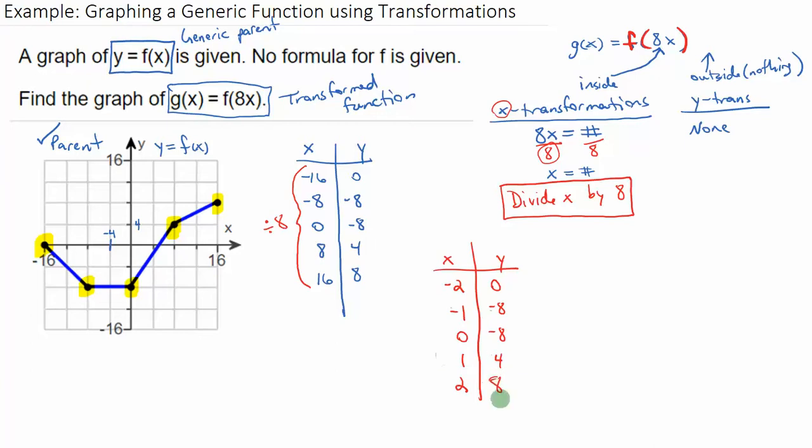So now these points represent my transformed function. These points represent g(x) = f(8x). Now what does the graph of that look like? To show you what's happening, I'll plot these points on the same plane over here in red. So this point (-16, 0) becomes the point (-2, 0), way over here.